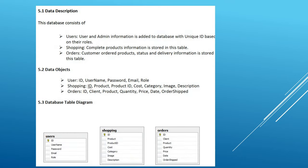The database consists of user and admin information stored with a unique ID based on their roles. Shopping, complete product information in the store, orders, customer orders, product status, and delivery information are all stored in data tables. When you register on a site, your ID is stored in their database, so you don't need to register every time — you are a customer of that application, and your details are saved with a unique ID based on your role.